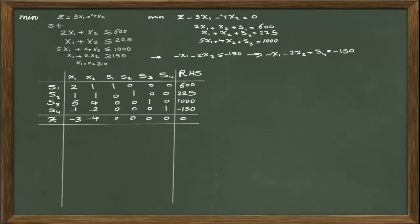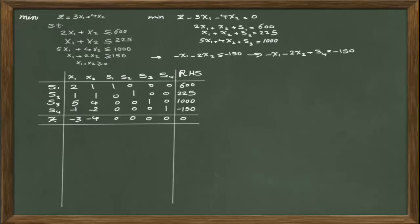If I set up the initial simplex table, all the coefficients in the row of z are negative, which means for a minimization problem we are in the optimality condition. But in the right hand side, there is a negative value, so the problem is infeasible. That is the initial requirement for starting a problem using the dual simplex method — you must start from a table that is optimal but has at least one negative value on the right hand side, meaning it is infeasible. For a maximization problem, the optimality condition requires all coefficients in the row of z to be positive.